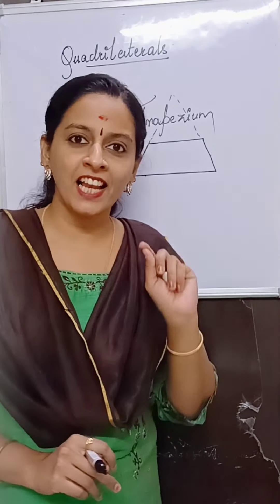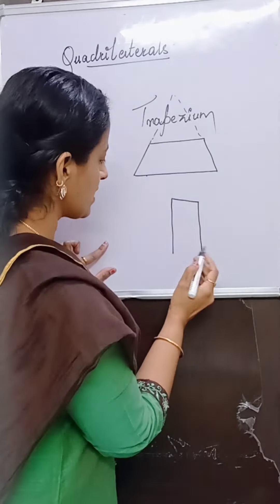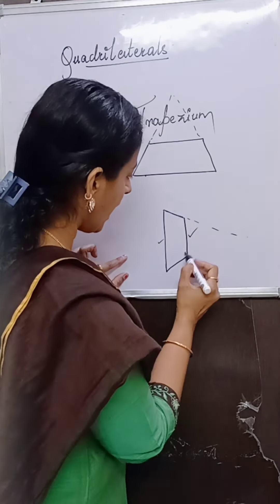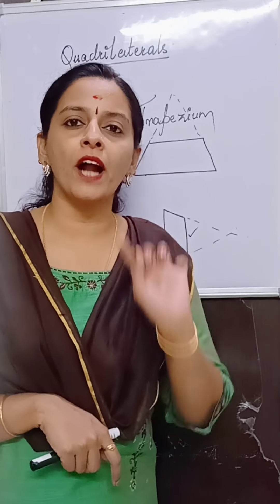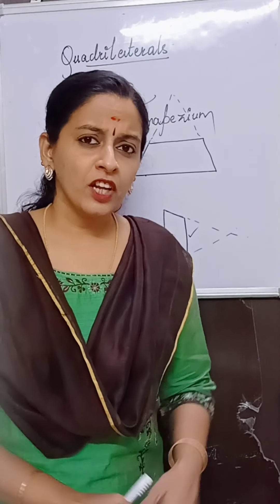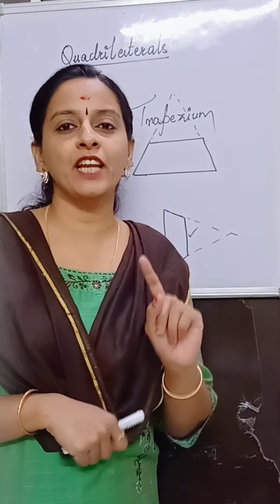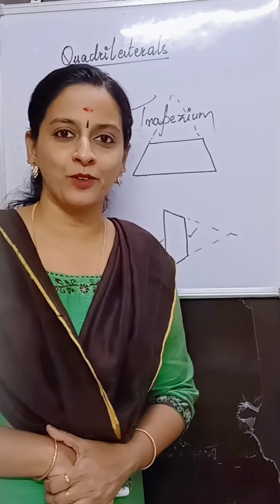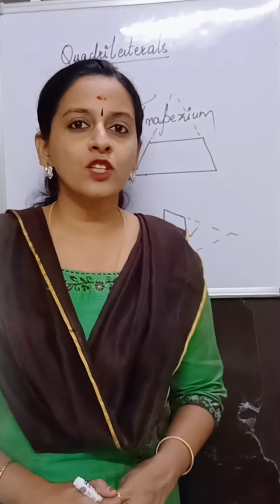A quadrilateral in which only one pair of opposite sides are parallel, whereas the other two sides are non-parallel and intersecting, is called a trapezium. Compare this to a parallelogram, where both pairs of opposite sides are parallel. In a trapezium, only one pair is parallel.